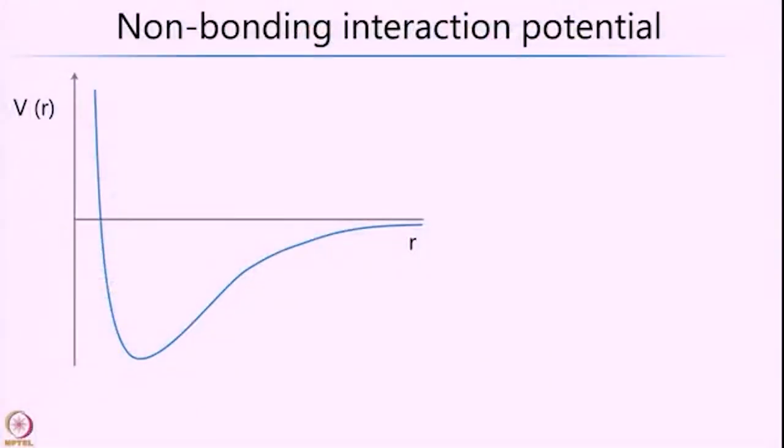With this understanding of the various interactions between molecules, we shall now jump into seeing how that affects the properties of gases. But before we get there, let us first try to understand the van der Waals interaction in a little more detail. In the last class we looked at the interaction energy between two molecules — for example, two methane molecules — and described it as a 1/R⁶ dependence. Now let us see what happens if we bring the two molecules very close to one another.